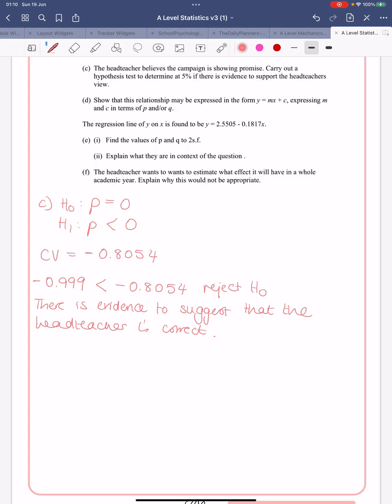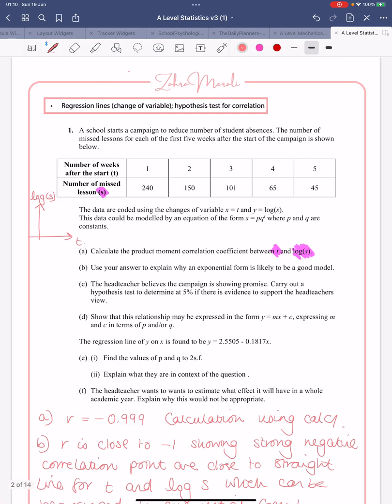Then it goes on to say show that the relationship may be expressed in the form y equals mx plus c, expressing m and c in terms of p and q. So if we go back to the beginning, we're given that the model can be given in this form, so s equals p q to the power of t.